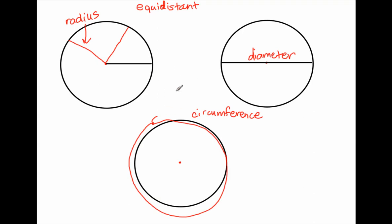Once we know what those parts are, there's actually a really interesting relationship between the radius and the diameter, as well as between the diameter and the circumference. And we'll quickly see the relationship by looking at a diagram that we're going to make right now.